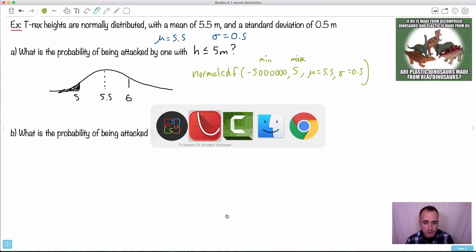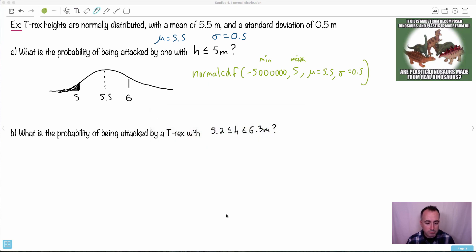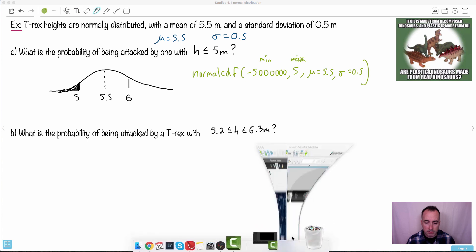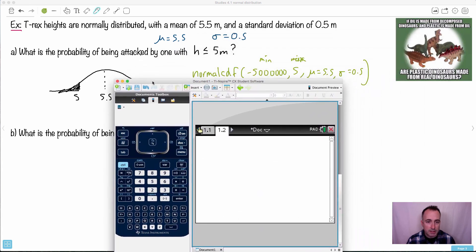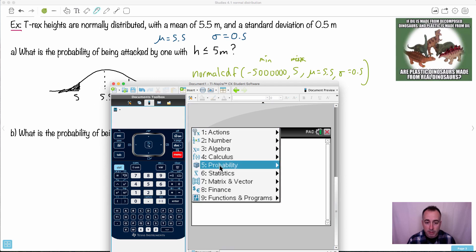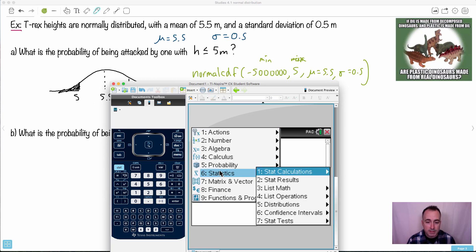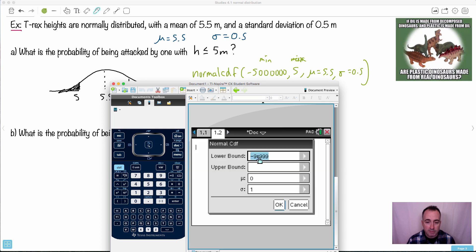So I get out my trusty calculator. So I'm going to do exactly this here. I'm going to open up my calculator. I press menu, I go to statistics, distributions, normal CDF. My smallest value, I mean, I could have put that. Just put a big, big negative number. Then I press tab. My upper bound though is 5. My mean is 5.5, and my standard deviation is 0.5. I scroll down and I say go.